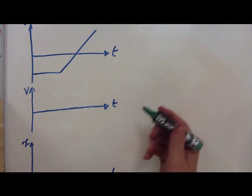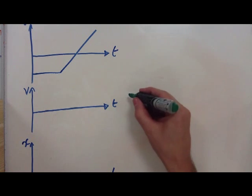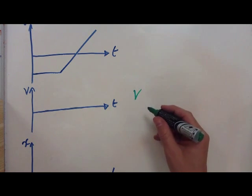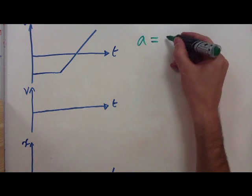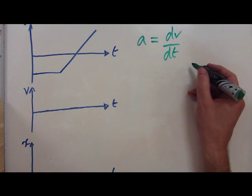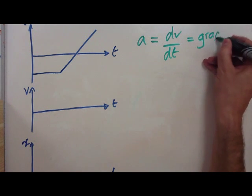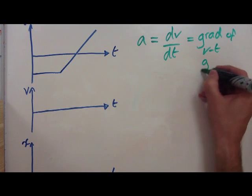The important thing again to remember is the relationship between them. We know that acceleration is equal to the rate of change of velocity with time, which means acceleration is the gradient of the Vt graph.